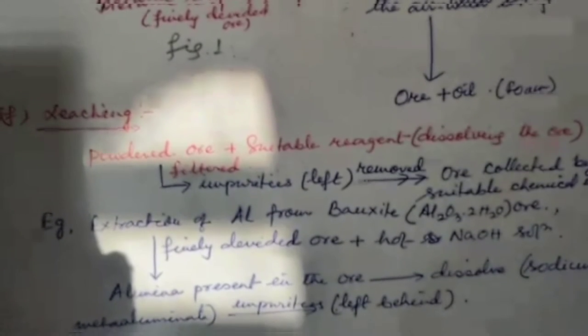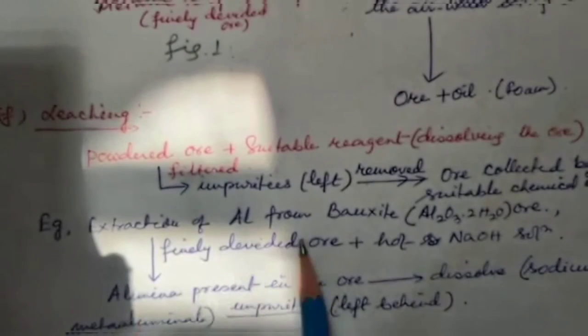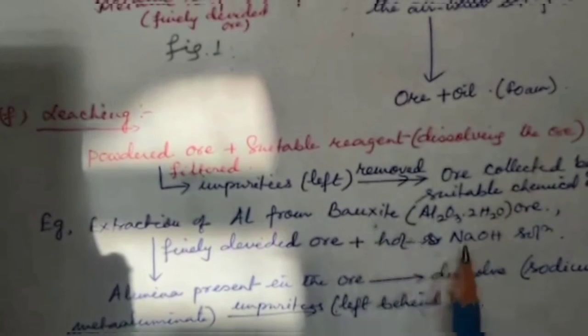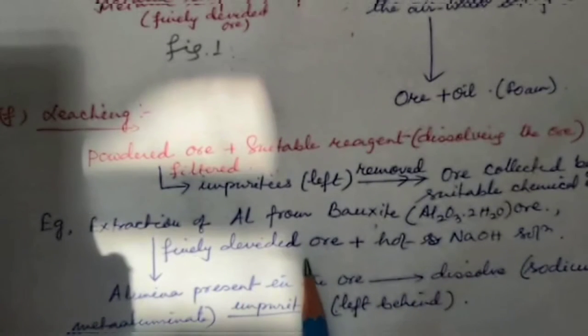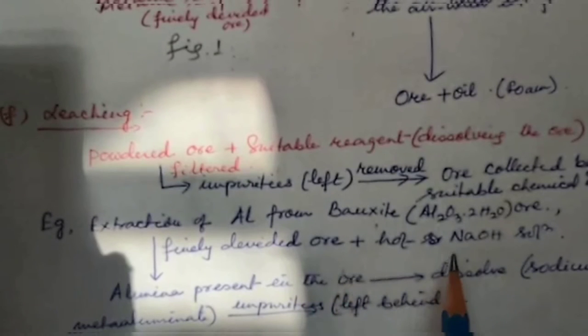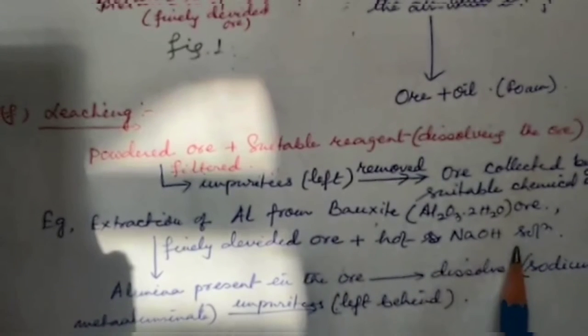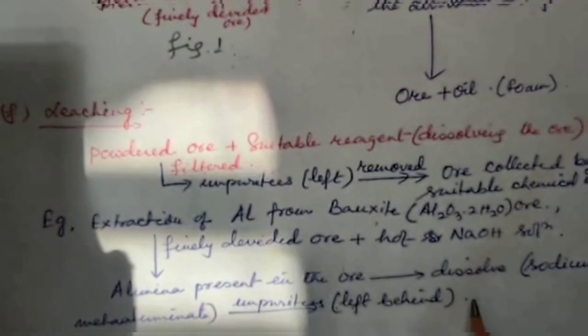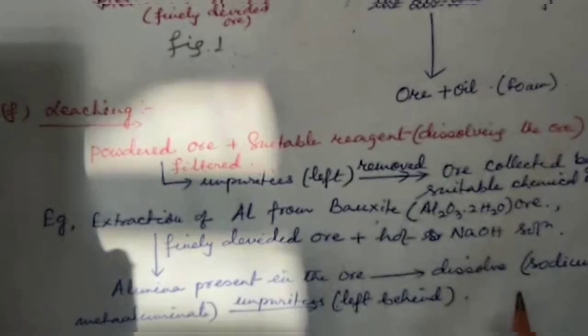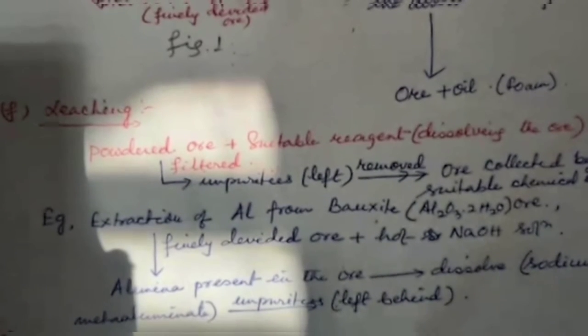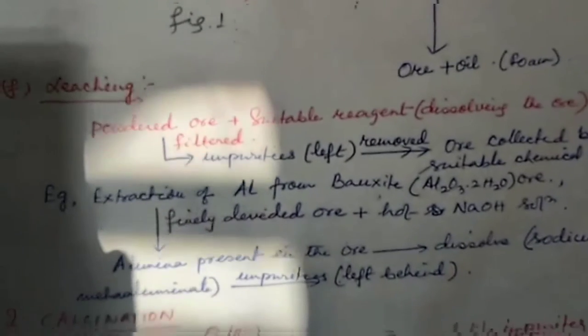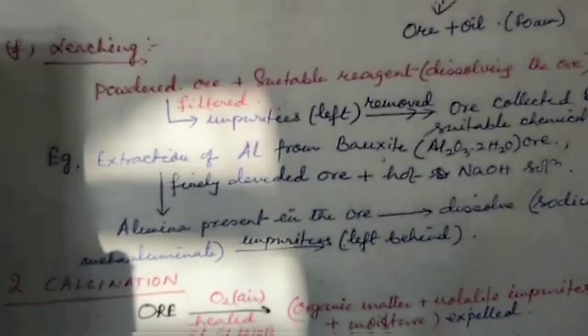For example, during the extraction of aluminum from bauxite, the finely divided ore is treated with hot sodium hydroxide solution. Alumina present in the ore dissolves forming sodium meta-aluminate, but impurities are left behind and are filtered off.